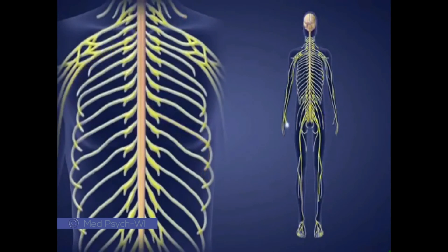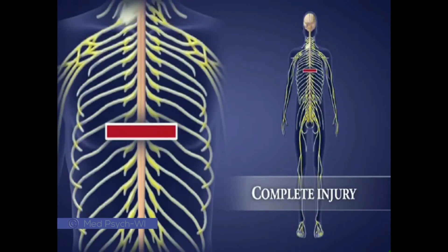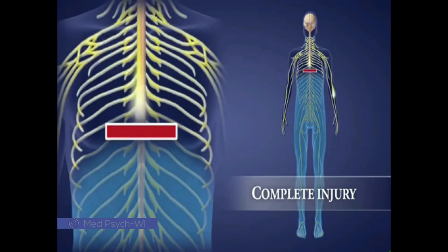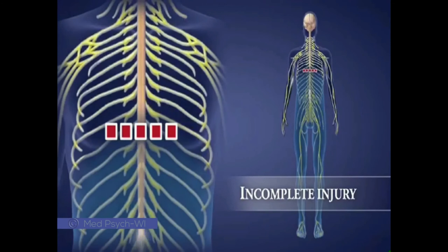When damage occurs higher up in the spine, there is a greater loss of function. Injuries to the spinal cord are called complete or incomplete. A complete injury means that there is no transmission of messages beyond the level of injury, resulting in no sensation and no voluntary movement below this area. An incomplete injury means that some messages are being transmitted, either movement and or sensation.